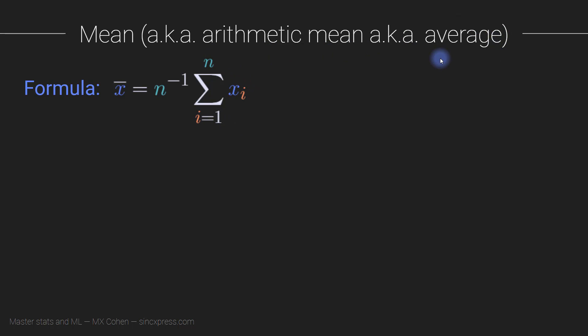To compute the average, you take all of your data points, add the values together, sum up all the data points, and then divide by the number of data points that you have.